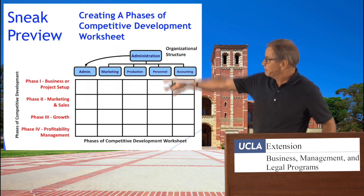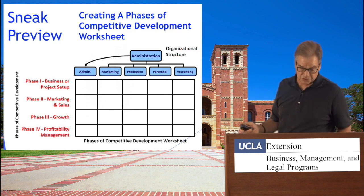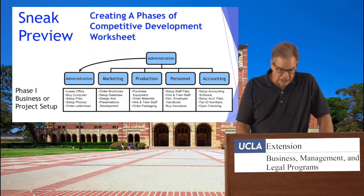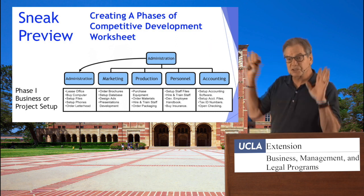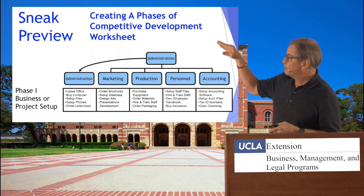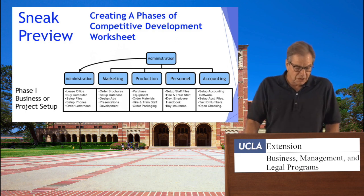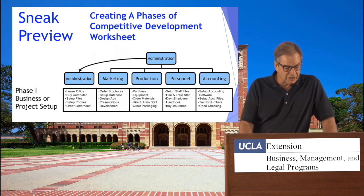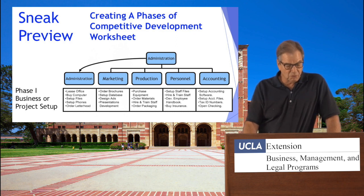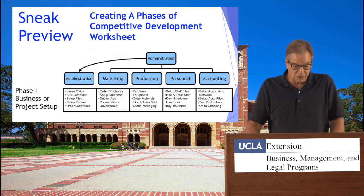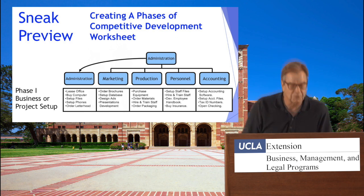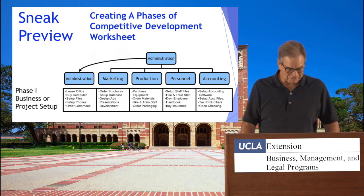This next slide emphasizes how the phases of competitive development integrate into our worksheet. Using bullet word phrases, for instance: Administration — lease office, buy computer, set up files, set up phones, order letterhead. Marketing — order brochures, set up database, design ads, presentation development. Production — purchase equipment, and things of that sort. We use the phase of competitive development worksheet to outline the objective of each department for each phase.